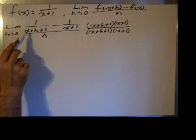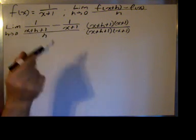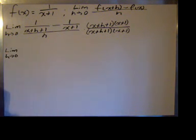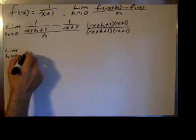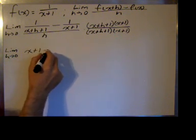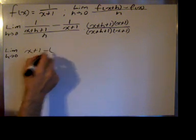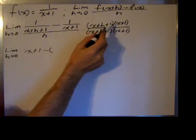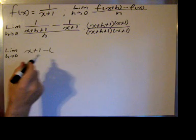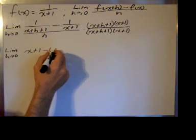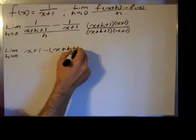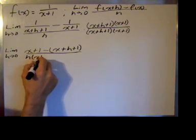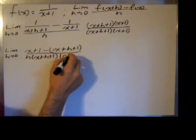the first expression, x plus h plus 1, will drop out, and we'll be left with the limit as h goes to 0. The x plus h plus 1 cancels out, we're left with x plus 1 — I'm going to leave that minus there and some parentheses — because I don't want to forget to distribute that negative 1. When I multiply this expression by this product, the x plus 1's cancel this time, and I'm left with x plus h plus 1,